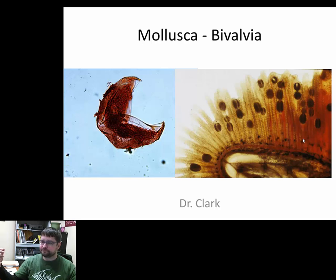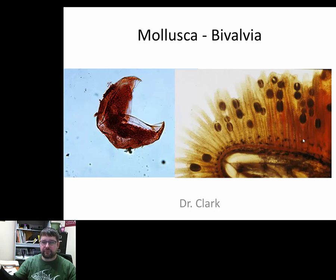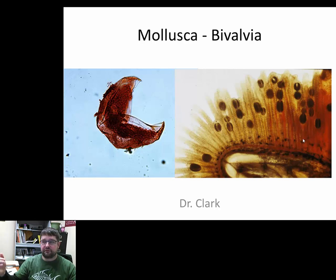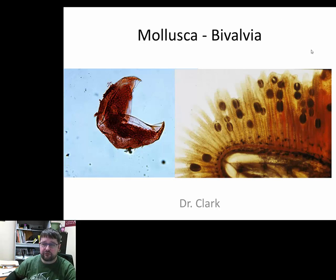Organisms will converge on a pattern that works — the environment is choosing, natural selection is picking the individuals best suited. Parasitism works in a lot of different groups, so it pops up over and over again. We'll come back to talk about other types of parasites as we progress, but first we're going to talk about the class Bivalvia.